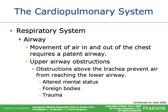The airway involves movement of air in and out of the chest and requires a patent airway — meaning an open airway with no obstruction. Upper airway obstructions above the trachea prevent air from reaching the lower airway and can result in altered mental status. This can be from foreign bodies, trauma, blood, teeth, bone — really anything that obstructs the airway, or anatomy that is crushed or distorted due to trauma.